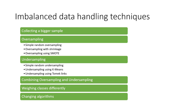The six techniques are: collecting a bigger sample when possible; oversampling, which includes random oversampling with shrinkage and SMOTE; undersampling, including random undersampling, k-means, and Tomek Links; combining oversampling and undersampling; weighing the classes differently within the model; and using algorithms that are more tolerable for imbalanced data.